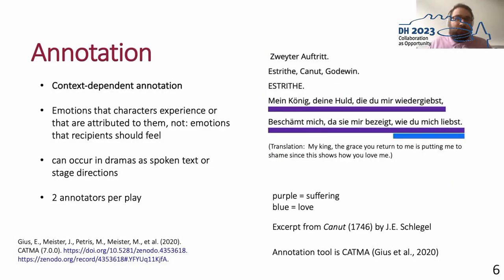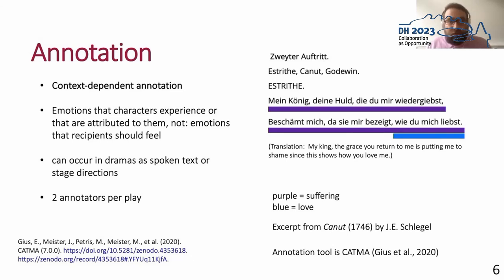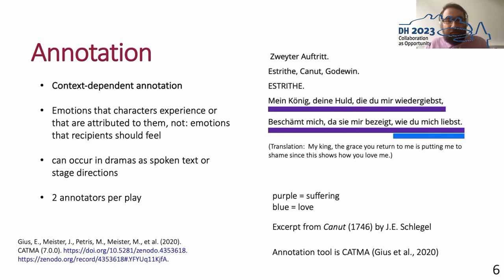The annotation itself was performed context-dependently, meaning the annotators had to take into account the entire content and meaning of a play and what a character really wants to express. Annotators can annotate as much or as few text as they feel appropriate with a specific emotion, and furthermore annotations can also be overlapping. For example, an annotator might annotate two lines as suffering and at the end of the same line as love — this is valid according to our annotation scheme. Annotators were trained and had access to annotation guidelines. We annotated the emotions characters of the play experienced themselves, not the emotion of the recipient or something else.